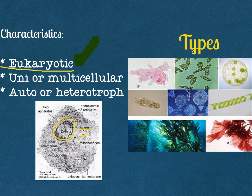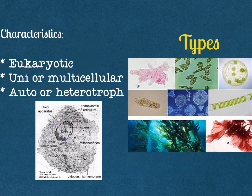Let's continue talking about the characteristics. This kingdom can be uni- or multicellular, which means they can be formed by one single cell or by thousands or millions of cells. They can also be autotrophic or heterotrophic — they can produce their own food by photosynthesis, or they can feed on other organisms, for example small bacteria or other types of protists.